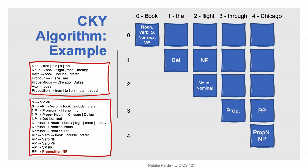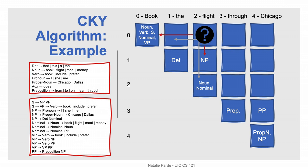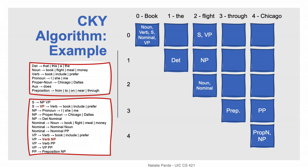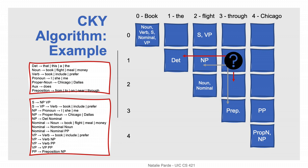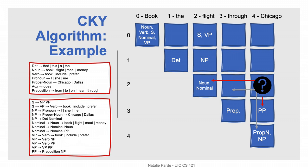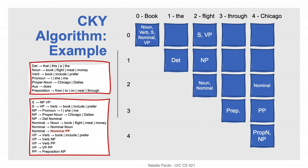Next, we move on to three-word constituents. We start with 'book the flight.' We could look for a noun, verb, sentence, nominal, or verb phrase followed by a noun phrase. We find that a sentence matches the verb phrase, and a verb phrase matches the combination verb followed by noun phrase. We move on to 'the flight through' — looking for a determiner followed by nothing, or a noun phrase followed by a preposition — and find no matches. For 'flight through Chicago,' we're looking for a noun or nominal followed by a prepositional phrase, and we find that a nominal is a match.